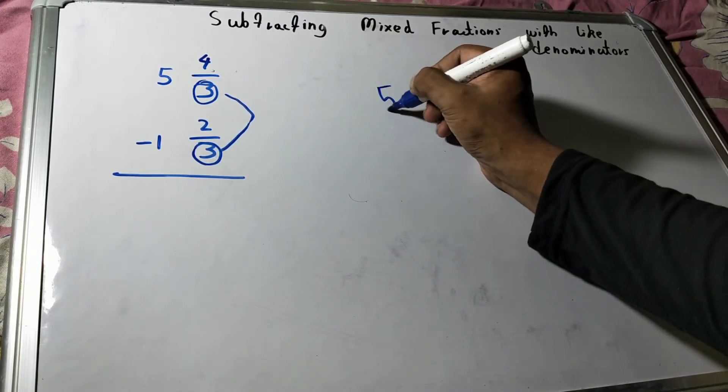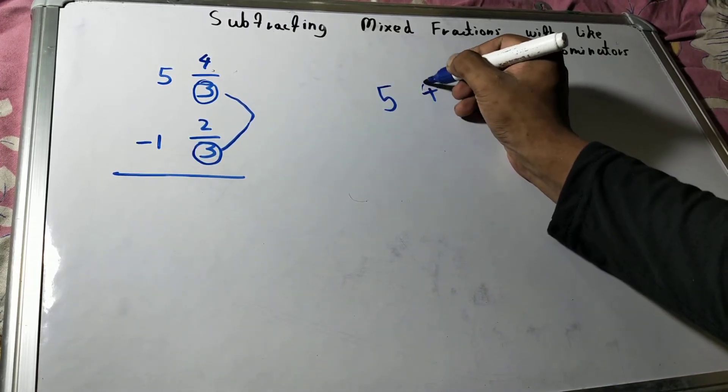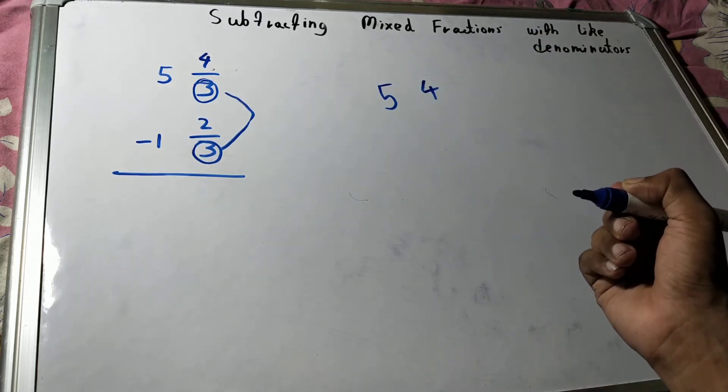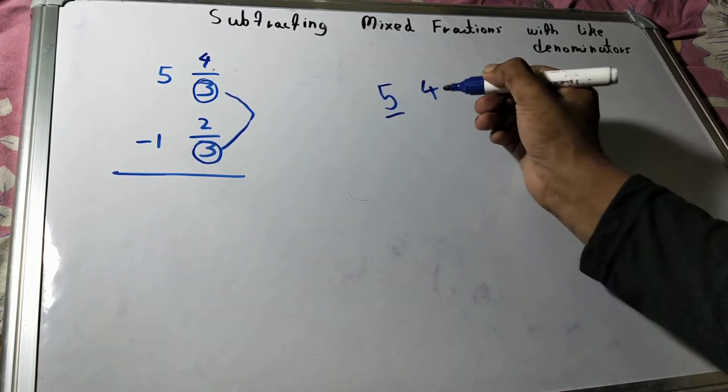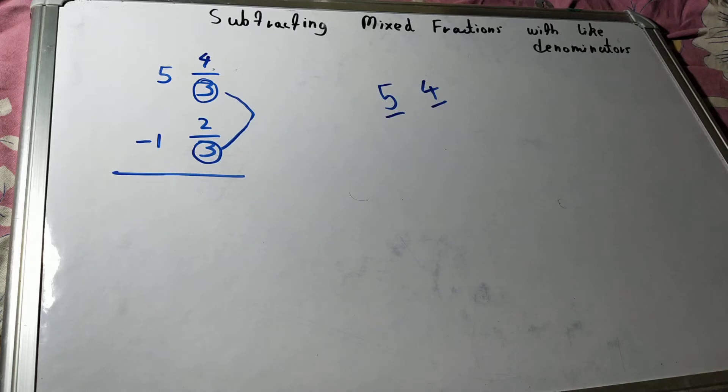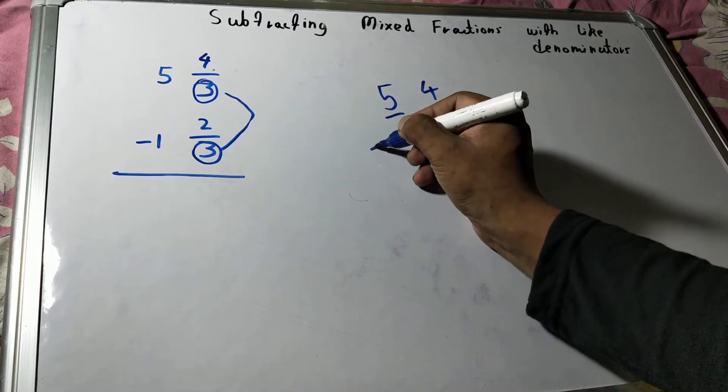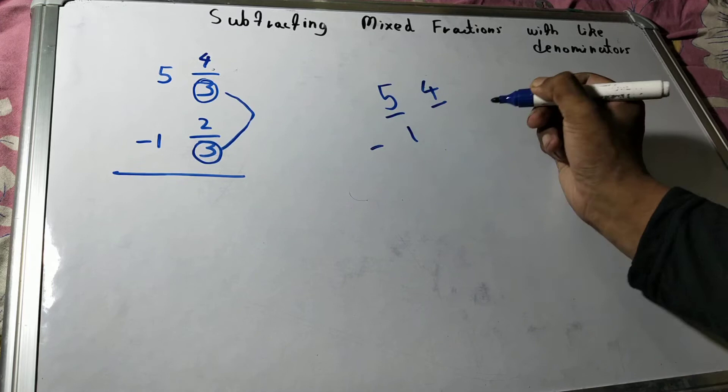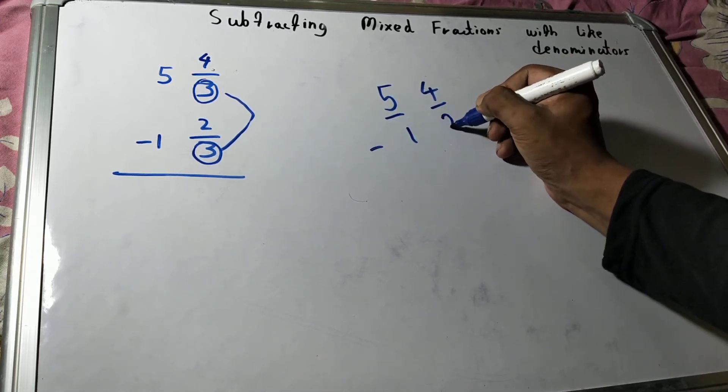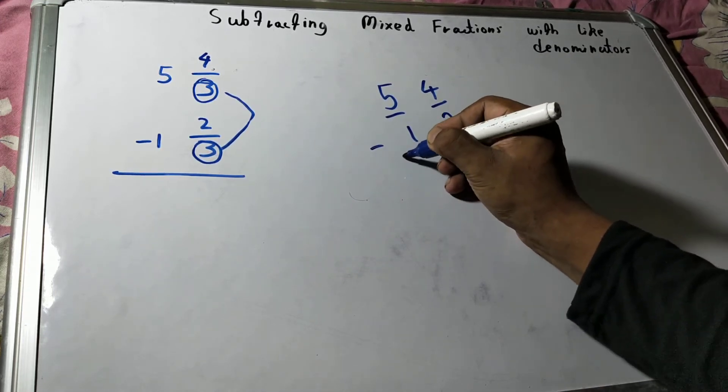That is 5 and 4 for the first mixed fraction, where 5 is basically the whole part and 4 is basically the numerator. Remember this. Similarly, in the second one you have 1 as the whole part and 2 is the numerator part.